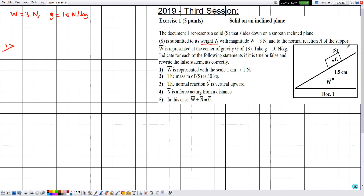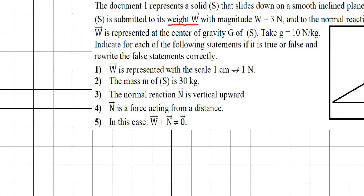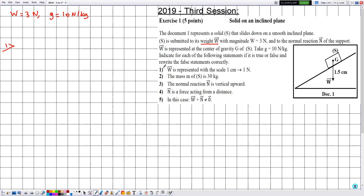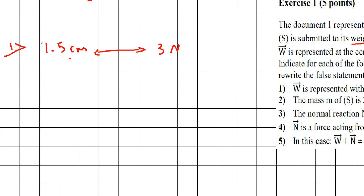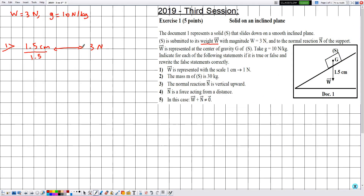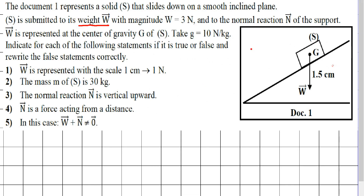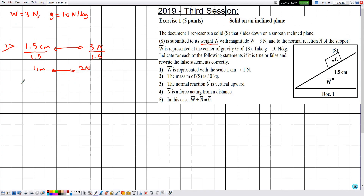Statement one says W is represented with a scale where one centimeter corresponds to one newton. We need to check if this is true or false. The length of vector W is 1.5 centimeters, representing a magnitude of 3 newtons. Dividing both sides by 1.5, each one centimeter corresponds to two newtons. So this statement is false — the scale is not 1 cm = 1 N.